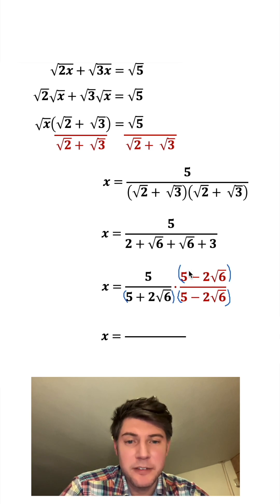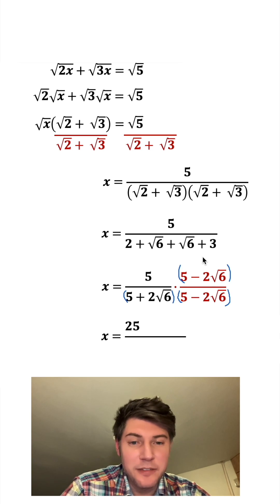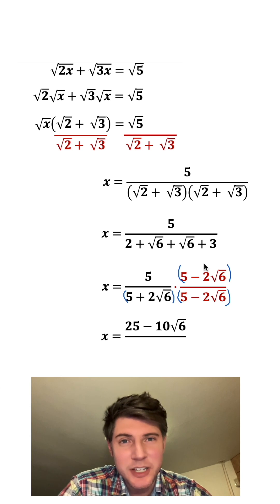So we're going to distribute this 5. 5 times 5 gives us 25, and then 5 times negative 2 root 6 is negative 10 root 6.